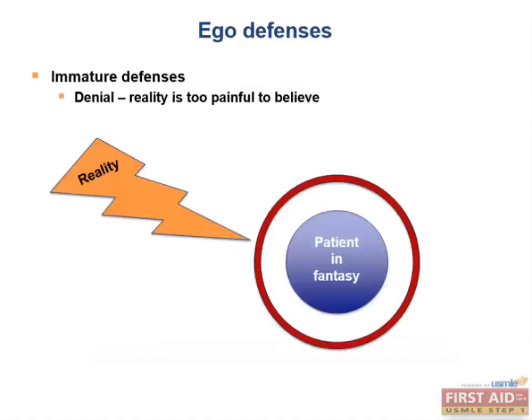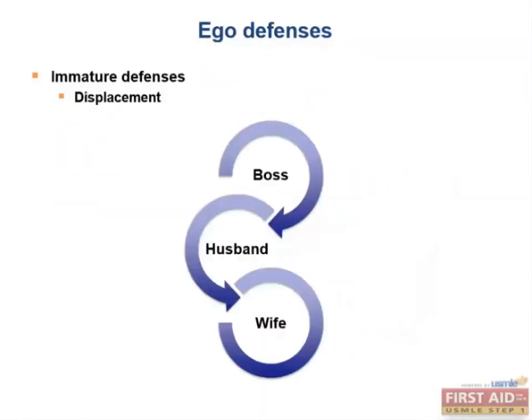Next in our list of immature ego defenses, we have denial. Denial is the avoidance of some painful reality. Classical examples of this are AIDS or cancer patients who deny their diagnosis, not believing that they really have this terrible disease and not ready to face the painful reality that truly exists.